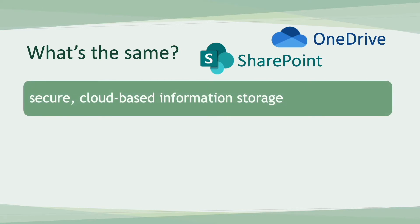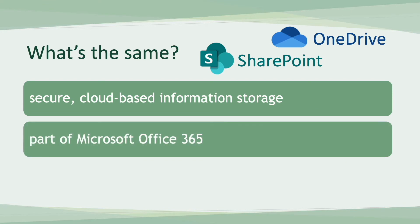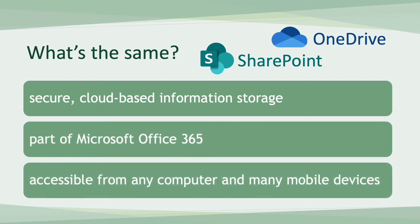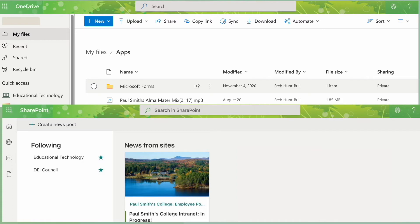OneDrive and SharePoint are both secure cloud-based information storage systems. They're both part of Microsoft Office 365, and they're both accessible from any computer and from most mobile devices. As you can see, online they look very similar.